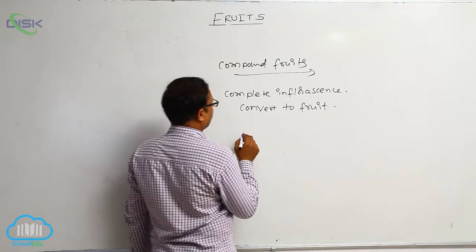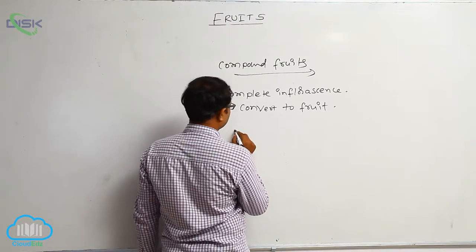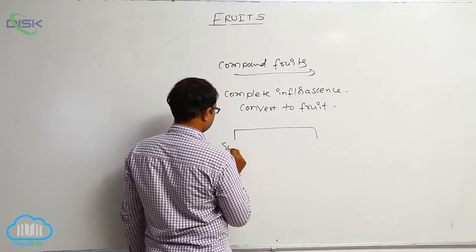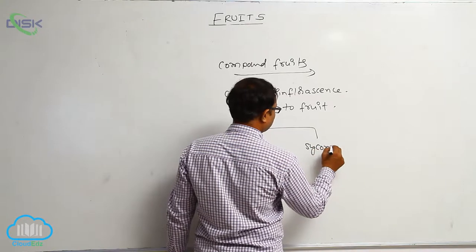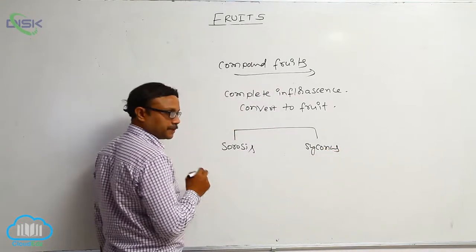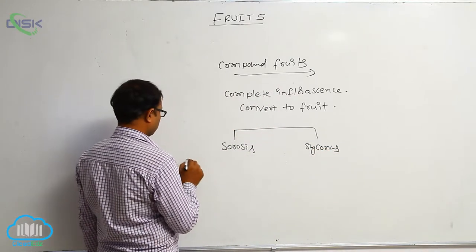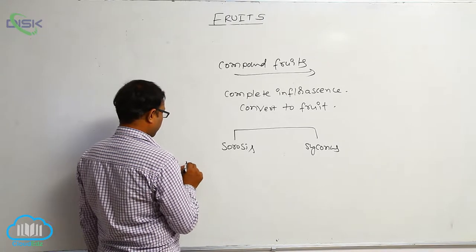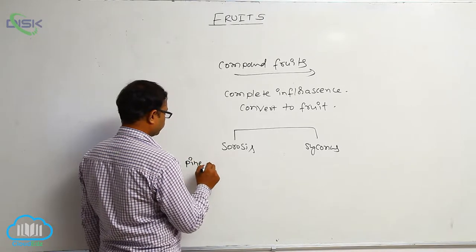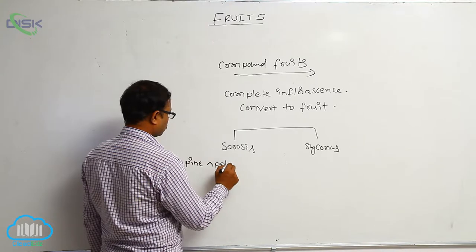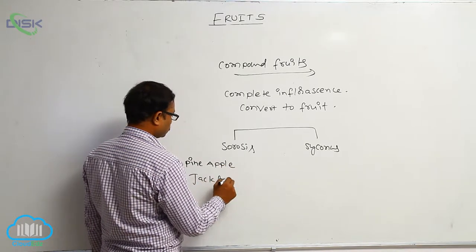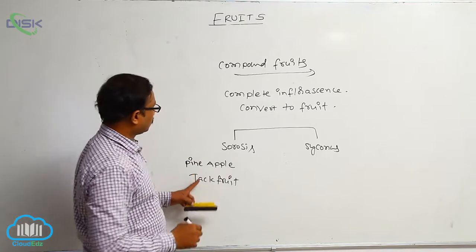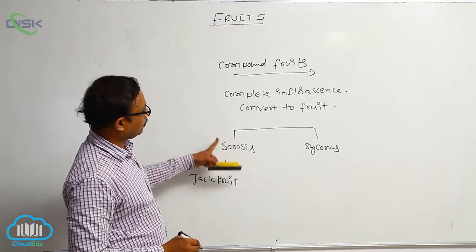So these compound fruits are of two types. Previous bit psorosis, second one is psychonus. Psorosis means, for example, pineapple, jackfruit. Pineapple and jackfruit are formed from psorosis compound fruit.